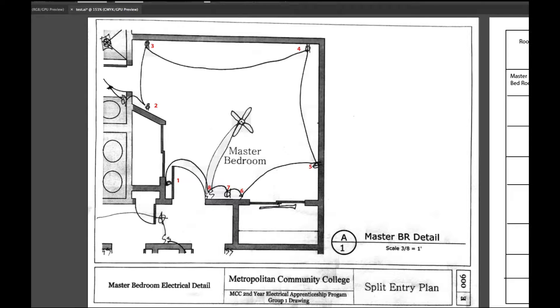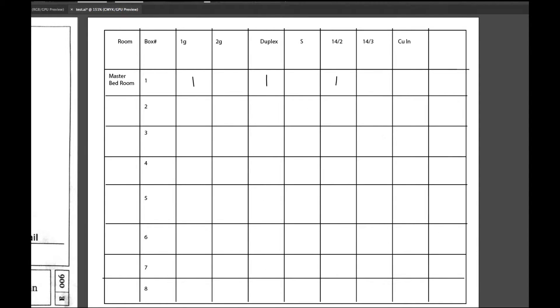If I go over here to box number two, it's a duplex. It's a single gang, and I see it has two 14.2s into it. So I would go a single gang, a duplex, two 14.2s.